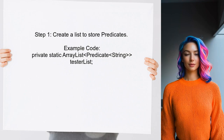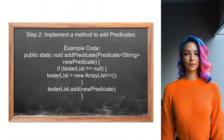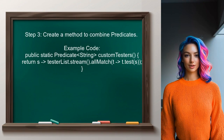To create a predicate from a custom list of predicates, first ensure you have a list to store these predicates — this can be done using an ArrayList. Next, implement a method to add new predicates to this list; that method should check if the list is initialized and then add the new predicate. Then create a method that combines all the predicates in the list into a single predicate using the Stream API to check if all predicates match the input.